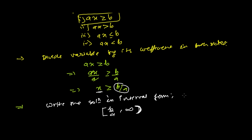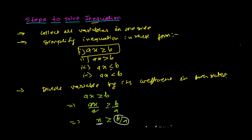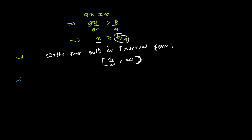So these are the four rules: collect all variables into one side, simplify into standard form, divide by the coefficient of the variable on both sides, and then write the solution in interval form. Let's take an example.